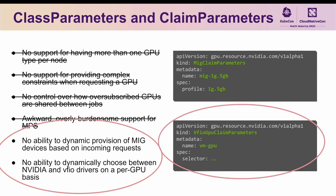Whenever a claim is allocated that references a VFIO GPU Claim Parameters object, a GPU matching the specified selector is found, swapped off of the standard NVIDIA GPU driver onto the standard Linux VFIO driver, and then bound to the claim. All of the necessary annotations required to ensure these GPUs eventually make their way into VMs are added by NVIDIA's DRA driver for GPUs as part of the overall claim allocation process.